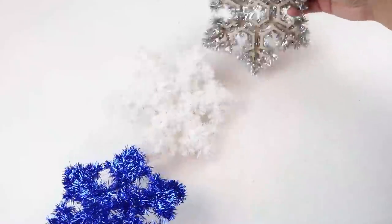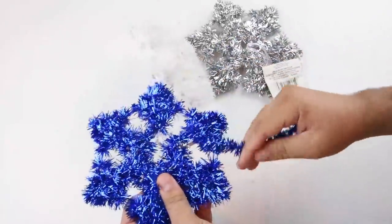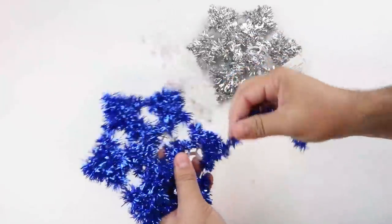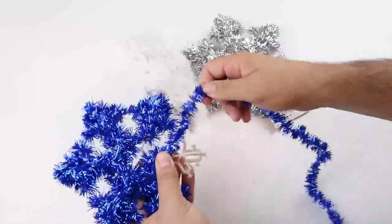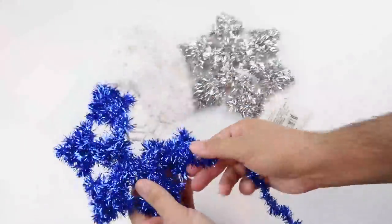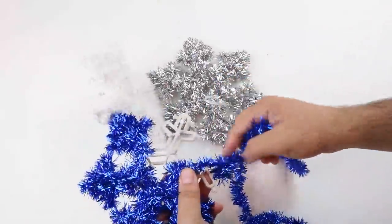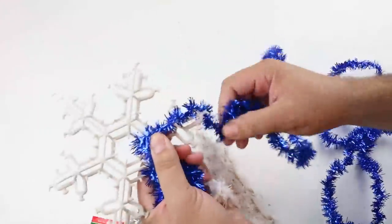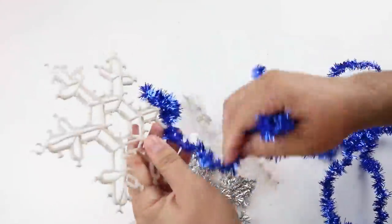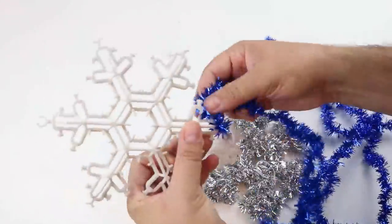For this project we are creating stocking hangers and this was a really fun project, so hopefully you're excited. We're using these three snowflakes from Dollar Tree and you want to remove all of the tinsel from these snowflakes. All we want are the forms that these came on. It's a little bit of a pain but just unravel that all the way around and you'll have the three frames left over, that's what we're using.